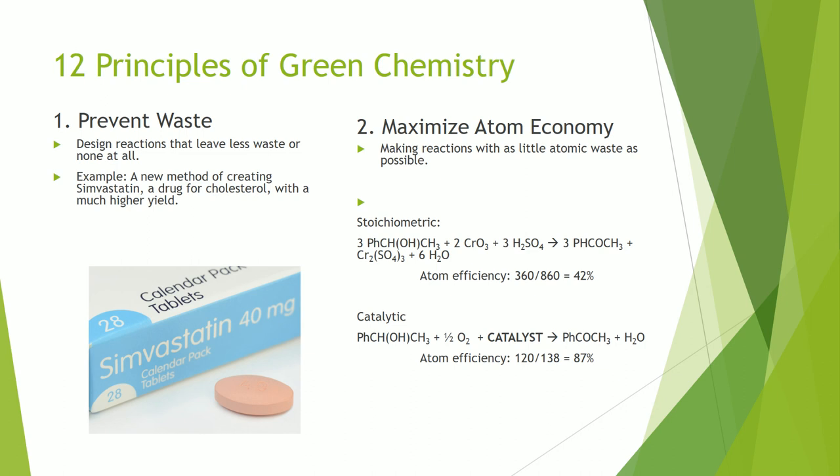Number two: maximize atom economy. This means to create reactions where as many of the starting materials end up as the desired product as possible, rather than unwanted extra products. This helps feed into preventing waste. Atom economy is calculated by dividing the weight of the product by the weight of the reactants. The example here shows two different reactions to make the same product, with the second having a much higher atom economy than the first.